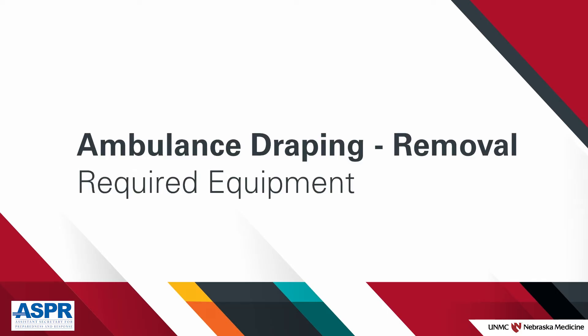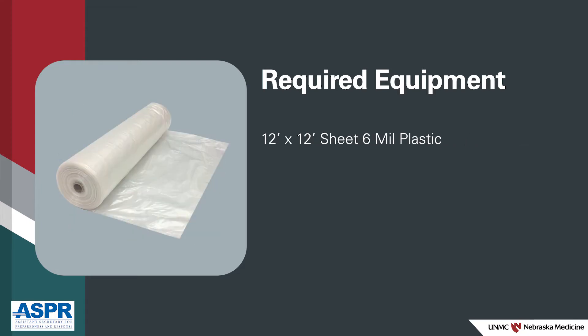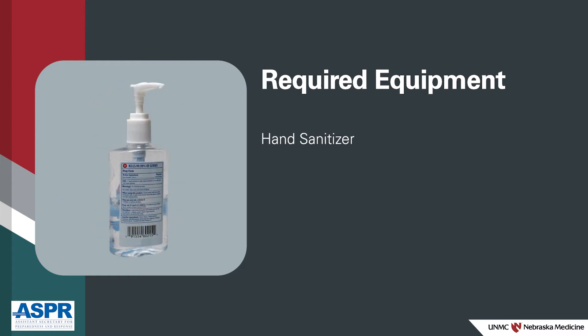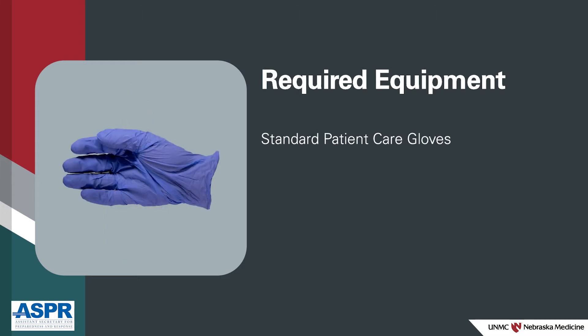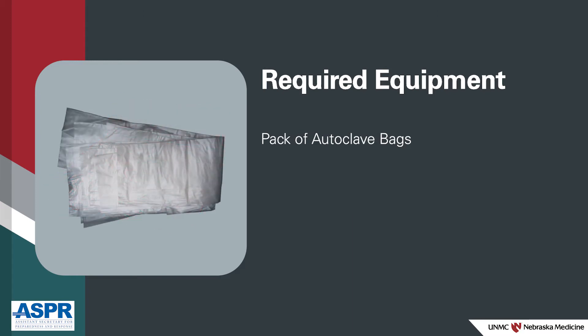To remove the ambulance draping you will need the following equipment: appropriate PPE ensembles for all operations team members; approximately 12 feet by 12 feet sheet of 6 mil plastic; disinfectant wipes; hand sanitizer; standard patient care gloves in a variety of sizes; and a roll of red biohazard bags, which should be 24 inches by 36 inches and autoclavable.